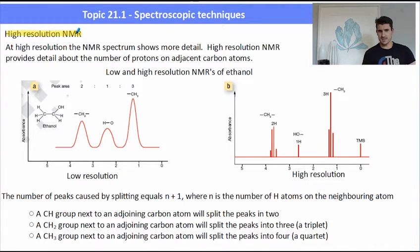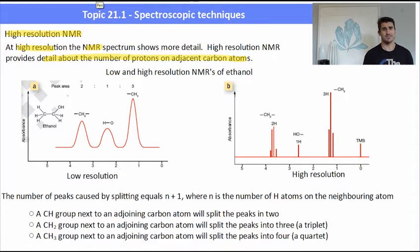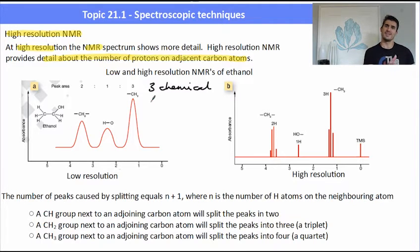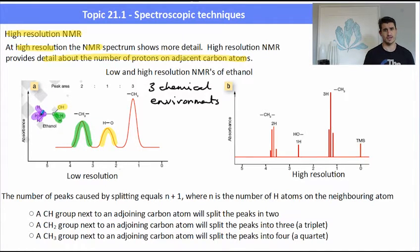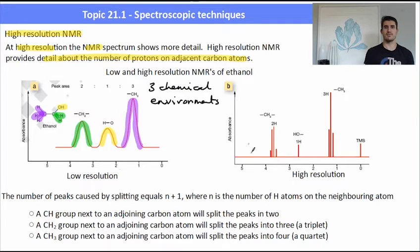It will be important for you to understand the low-resolution NMR, so I'm going to assume that we've done that. At high-res NMR, the NMR gives us more detail about the adjacent carbon atoms. Here we have the low-res NMR and the high-res NMR for ethanol. From the low-resolution one, the simplest thing to get is that we have three chemical environments — three different peaks corresponding to three chemical environments. The high-resolution NMR looks like a series of little peaks which makes up the larger peak.